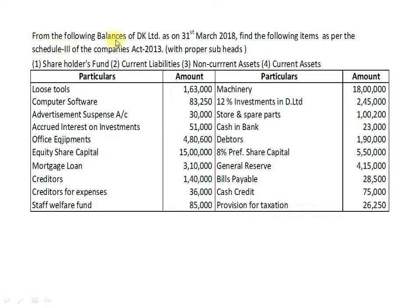From the following balances of DK Limited as on 31st March 2018, find the following items as per Schedule 3 of the Companies Act 2013 with proper sub-heads: 1. Shareholders Fund, 2. Current Liabilities, 3. Non-Current Assets, 4. Current Assets. The financial data includes Loose Tools, Computer Software, Advertisement Suspense Account.